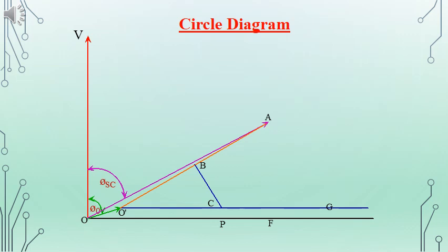We draw a perpendicular BC to O'A such that point A bisects O'A. C will be the intersecting point on the line O'G. With radius O'C and considering C as the center, we can complete the semicircle shown as O'AG in the figure.